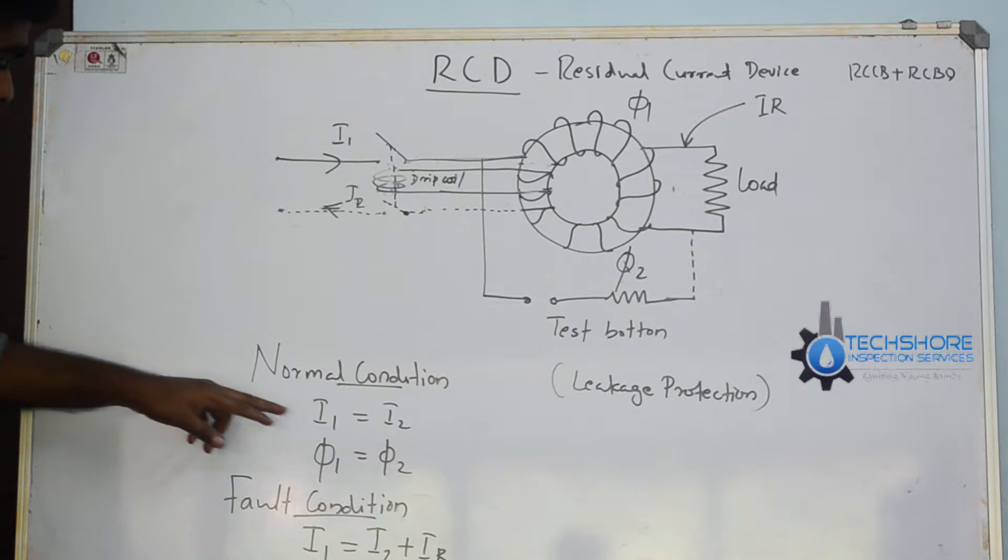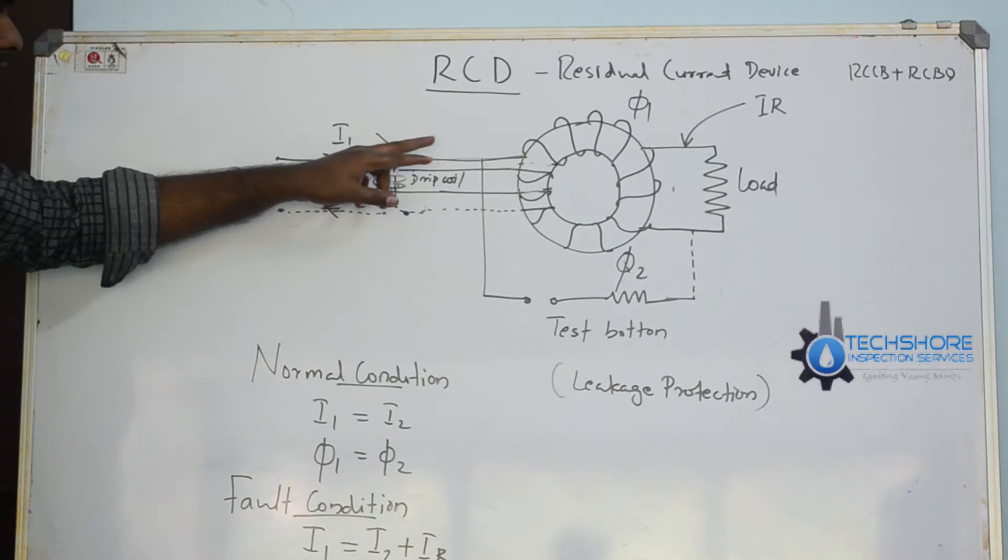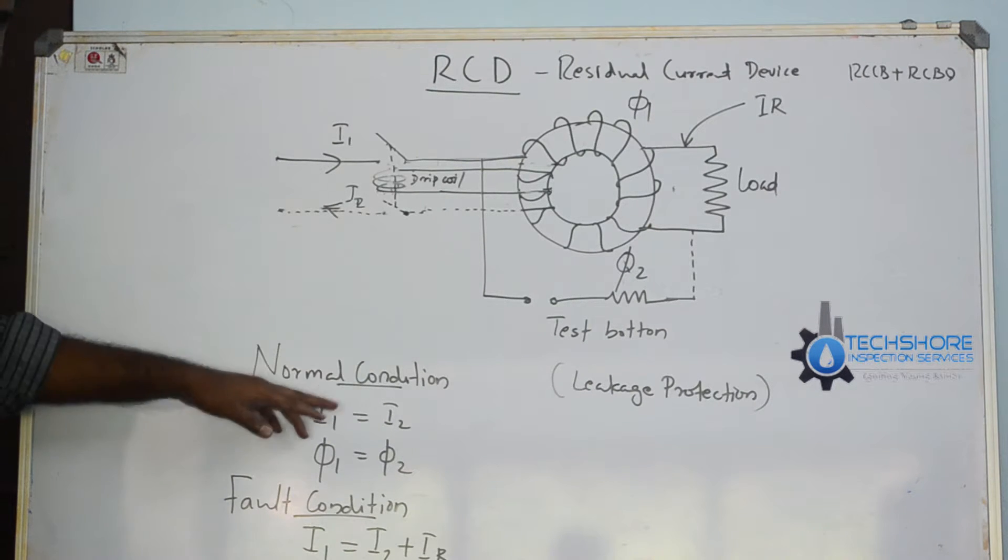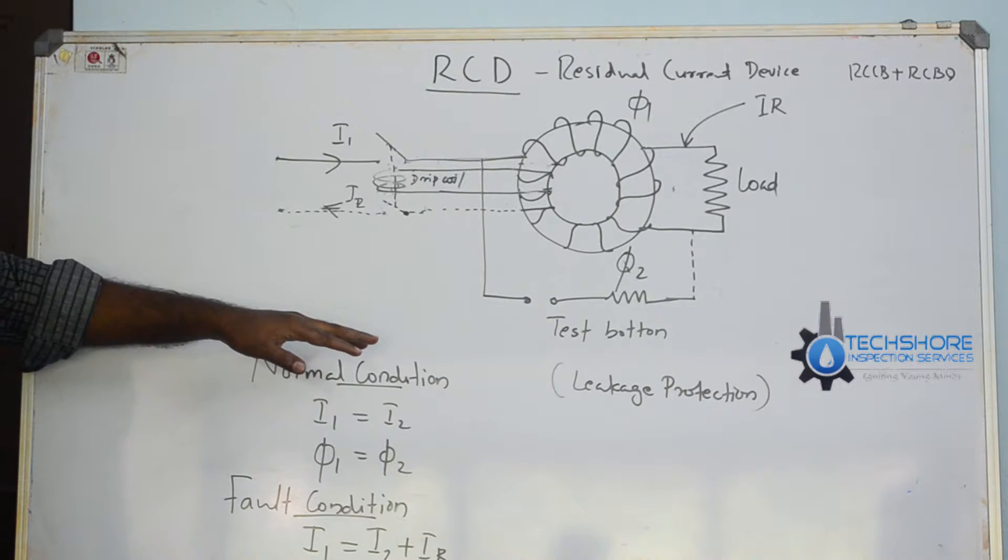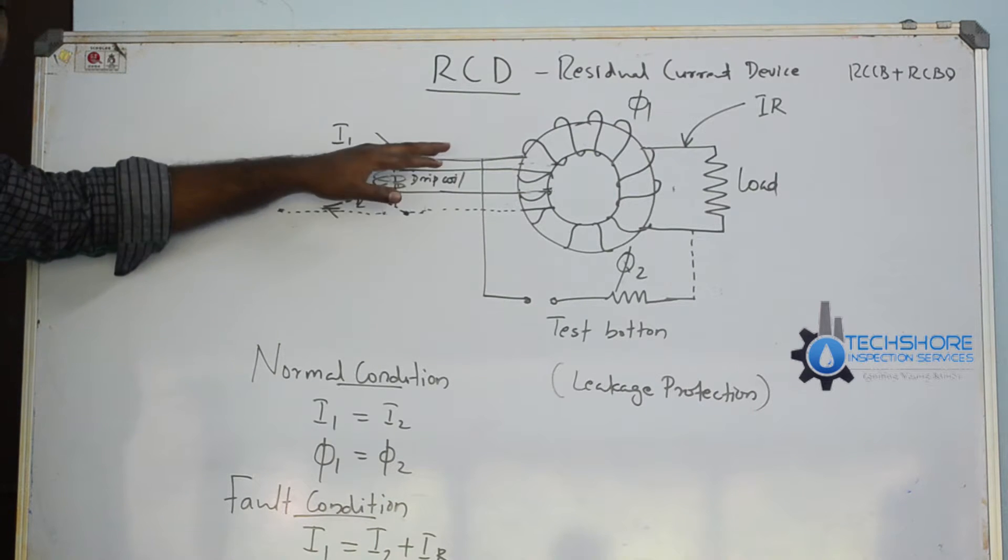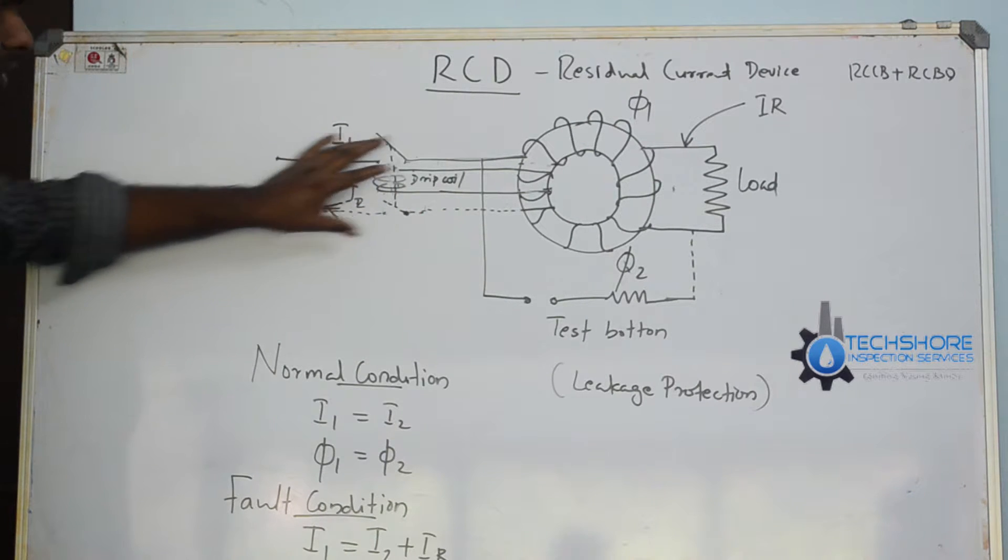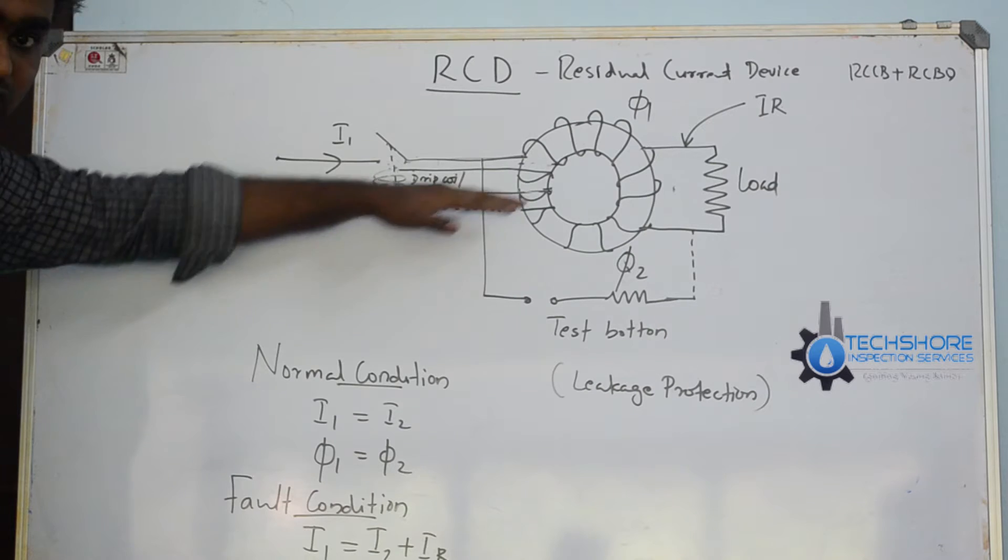Then the normal condition should be I1 is equal to I2. First phase and second phase same current. Then phi1 is equal to phi2. That means no flux leakages. So there is no problem. It is normal running condition.